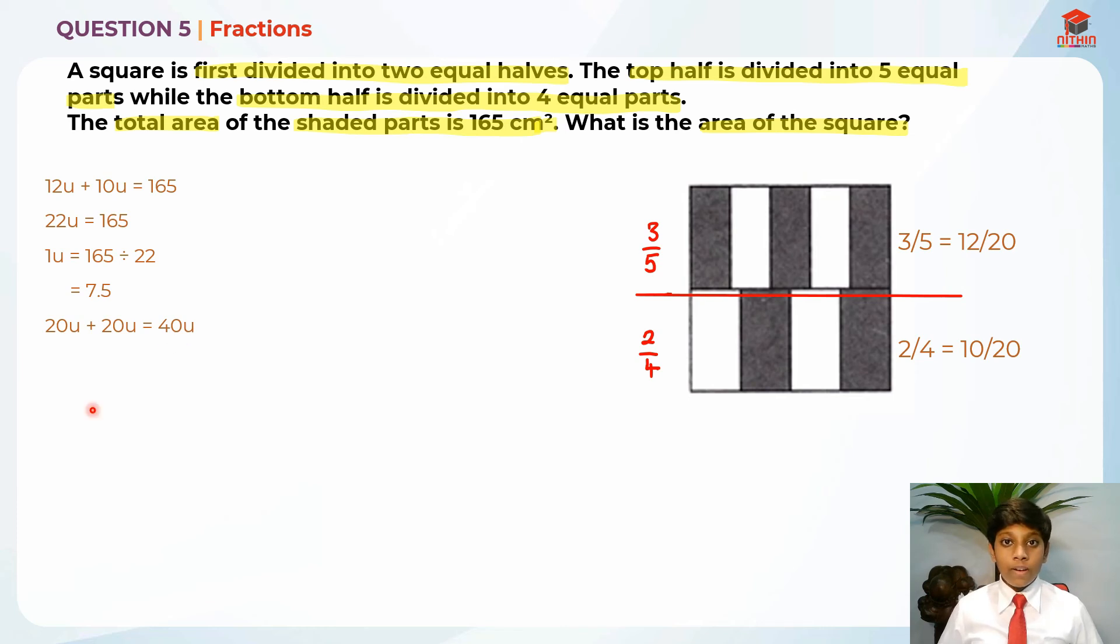So in order to find the area of the square, we just need to find 40 units. So 40 units is equal to 7.5 times 40 because 7.5 is 1 unit. So in order to find 40 units, we take 7.5 times 40, which will give us 300 cm² as the answer.